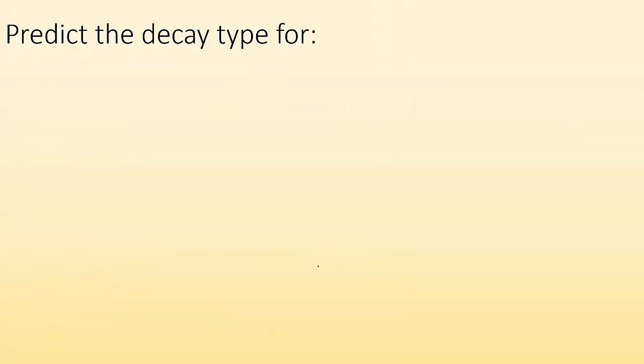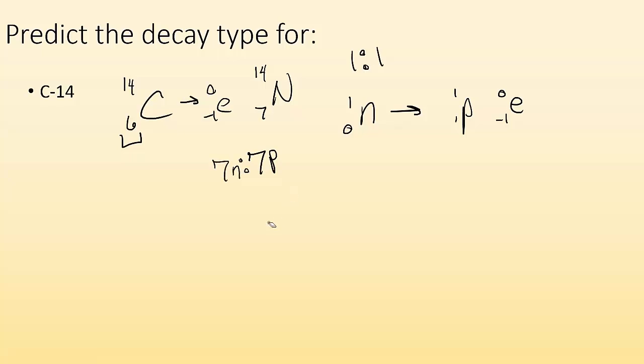So how about we try predicting the decay type for carbon-14? I know carbon has an atomic number of 6 and a mass of 14. So that tells me that I got 6 protons and I must have 8 neutrons. So it's going to give me an 8 to 6 ratio. But for the smaller elements, below 20, it's better and more stable to have a 1 to 1 ratio. So I got too many neutrons. So what kind of decay is going to change a neutron into a proton? It's going to have to be a beta particle. So we're going to have beta particle emission.